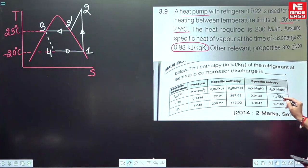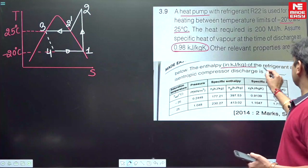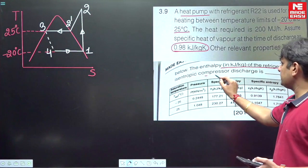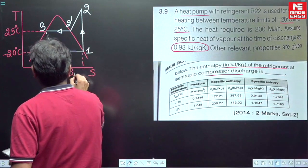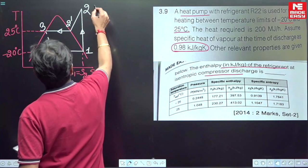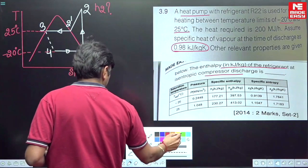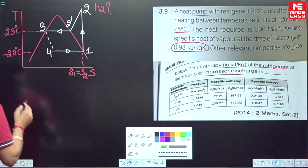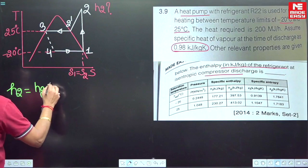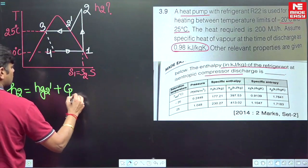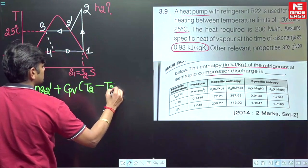Now you have to find out the enthalpy in kilojoule per kg of the refrigerant at the exit of the isentropic compression. So it is already given in the question it is a case of isentropic. So you have to find out the values of H2. Now tell me the point S2 is in which region? Is it in superheated region? So apply the concept of your pure substance.